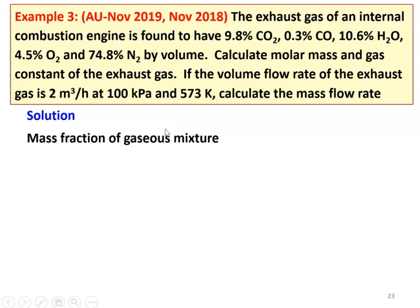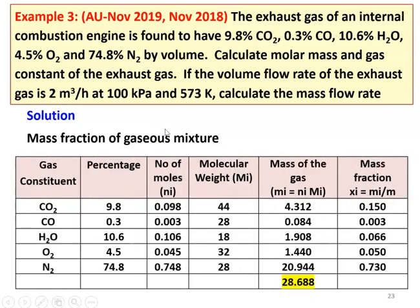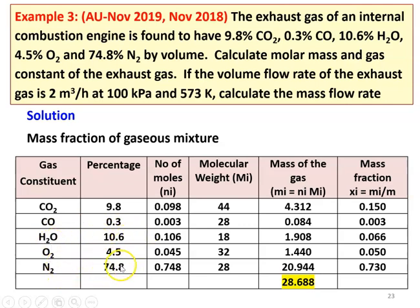We have to first calculate the mass fraction of the gaseous mixture. We will prepare a table. First column: gas constituent — CO2, CO, H2O, O2, and N2. The percentage given in the problem: CO2 is 9.8, CO is 0.3, H2O is 10.6, O2 is 4.5, and N2 is 74.8. The second column is the number of moles, obtained by dividing the percentage by 100: 0.098, 0.003, 0.106, 0.045, 0.748.